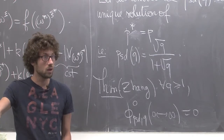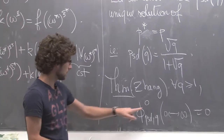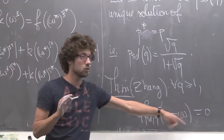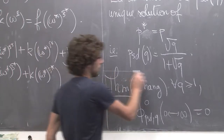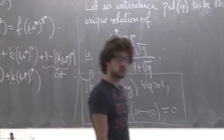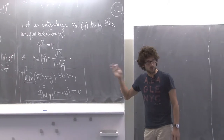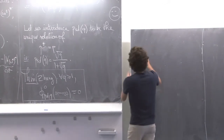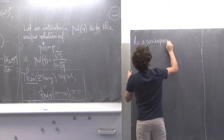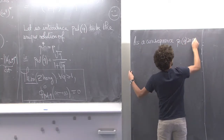The theorem you can prove just by running Zhang's argument is: for any Q ≥ 1, phi^0_{P_sd, Q}(0 connected to infinity) = 0. Because if you assume for free BC you have an infinite cluster, then in the dual it's going to be wired BC, so you also have an infinite cluster in the dual — and you can run Zhang's argument. This is sufficient: as a corollary, you deduce that P_c(Q) ≥ P_sd(Q).